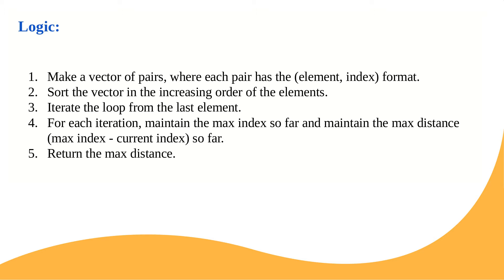When we sort the elements in increasing order, we are sure the right element is greater than the left, and we only need to handle the index difference. Third step: iterate the loop from the last element, because the maximum element after sorting is at the last index. Fourth step: for each iteration, maintain the max index so far and maintain the max distance, which is max index minus current index. Return the max distance as the answer.